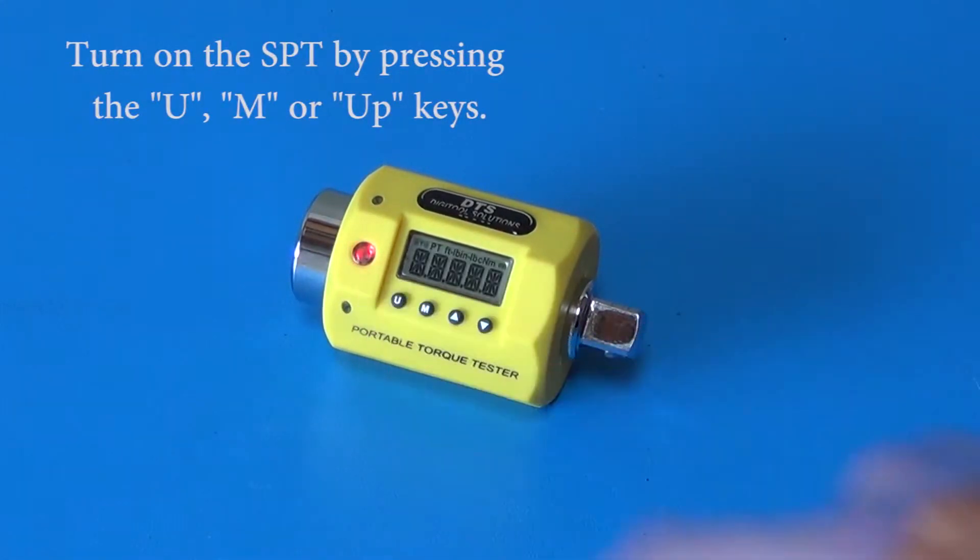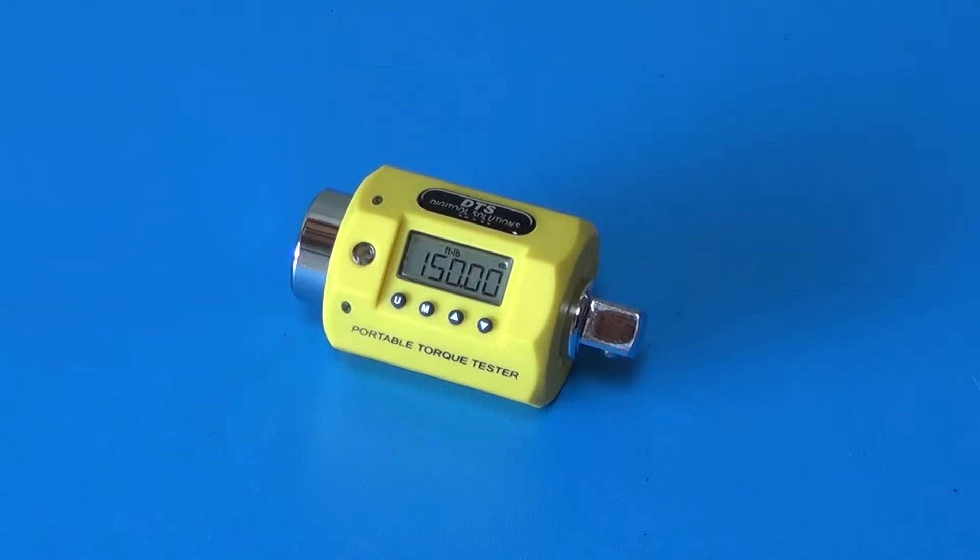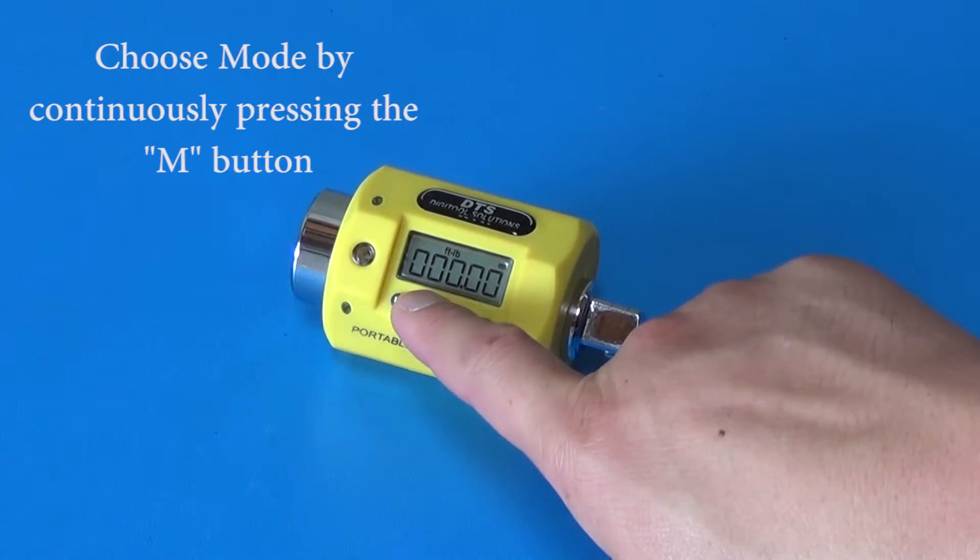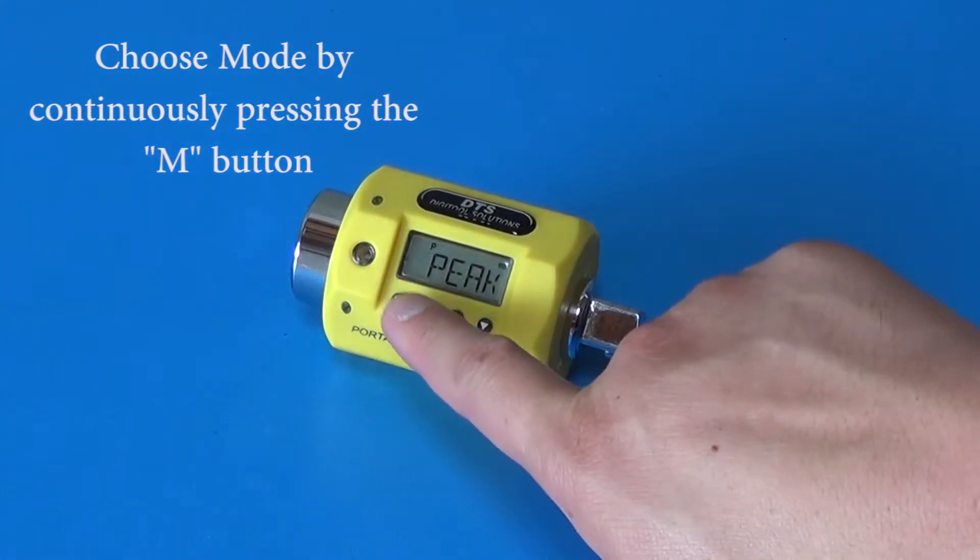Setting up the SPT for use is as easy as 1, 2, 3. After turning the tester on, number 1, choose your mode: track, peak, or first peak.